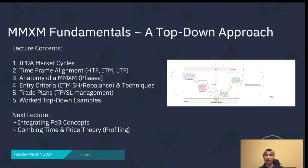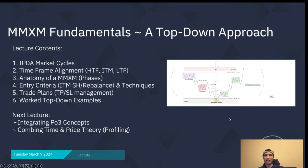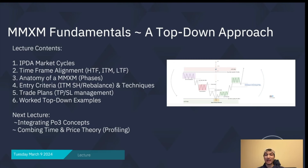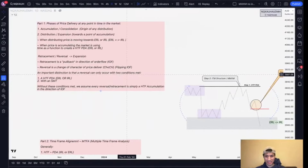The first thing we're going to talk about is market cycles — how the market moves between consolidations, expansions, reversals, and retracements. Then we'll jump into time frame alignment looking at the three time frames associated with market maker models and multiple time frame analysis. After that, the anatomy of a market maker model, entry criteria, trade plans, and finally a top-down analysis worked example from today on the Nasdaq.